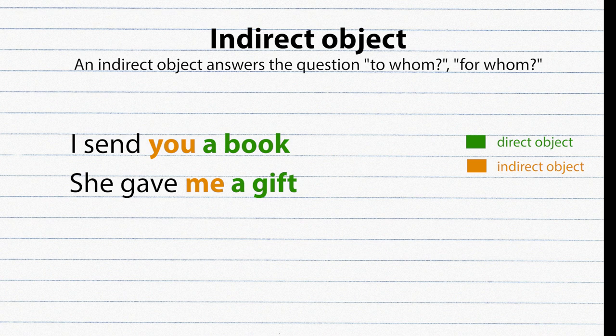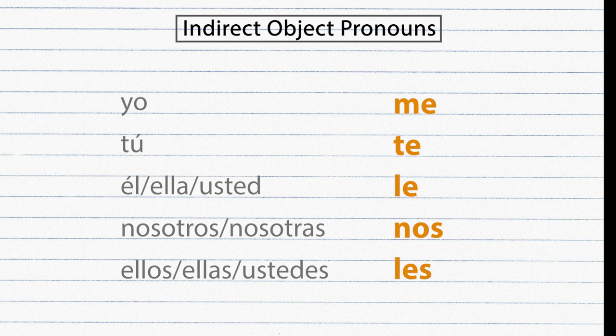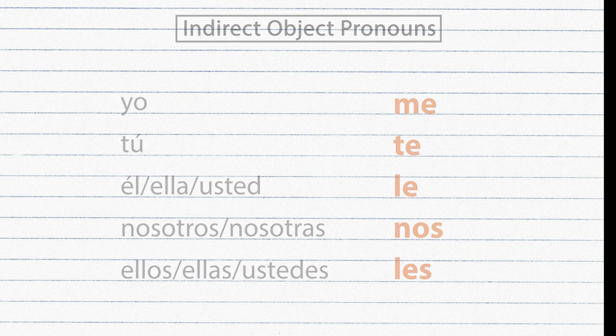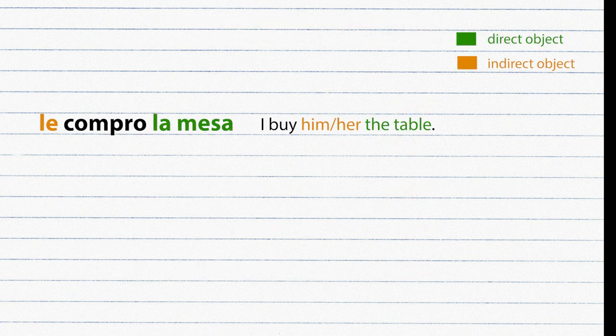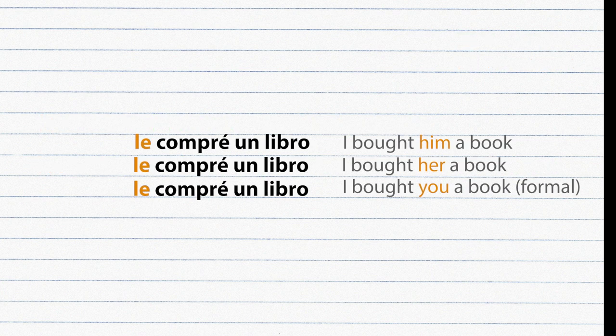These are the indirect pronouns in Spanish. Examples: Le compro la mesa. Les hago muchas preguntas. Note that 'le' can mean he, she, or the formal you. To clarify the pronoun, you can add 'a él,' 'a ella,' or 'a usted.'